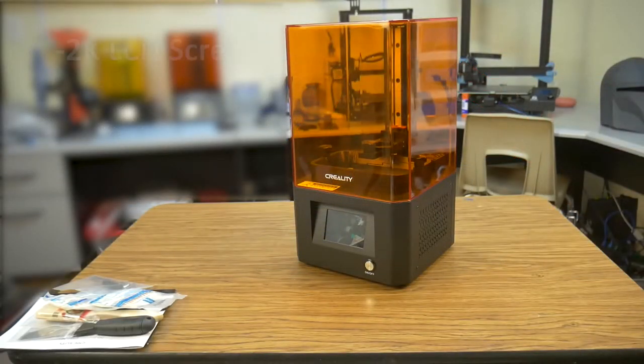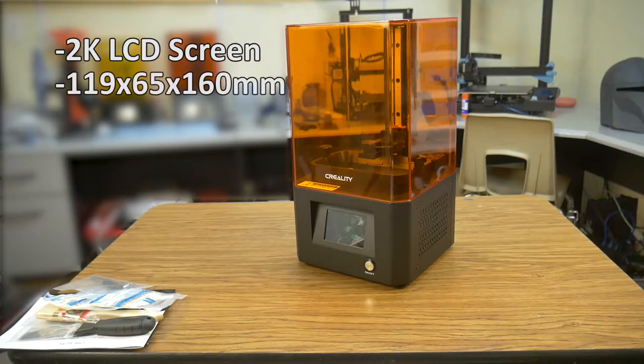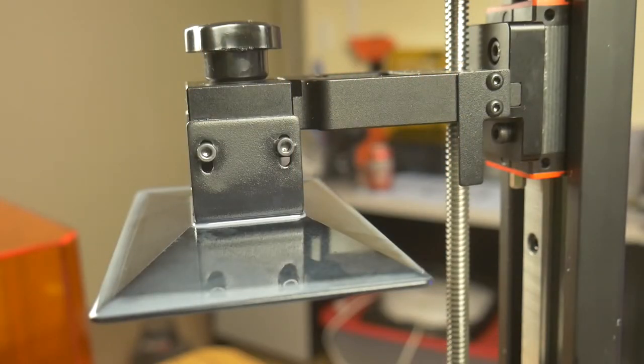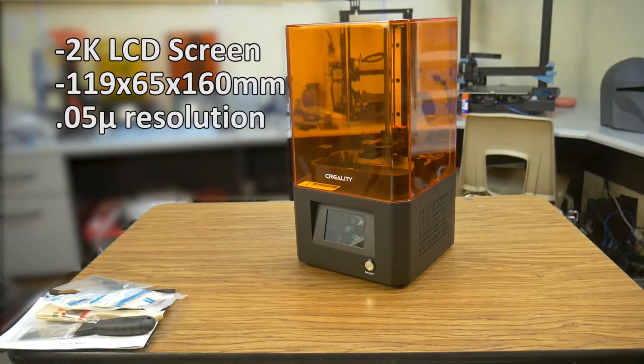This printer sports an LCD screen with 2K resolution and a build volume of 119 by 65 by 160 millimeters. The build platform rides on a linear rail and is driven by a Z screw. The minimum XY resolution on this printer is 0.05 microns.